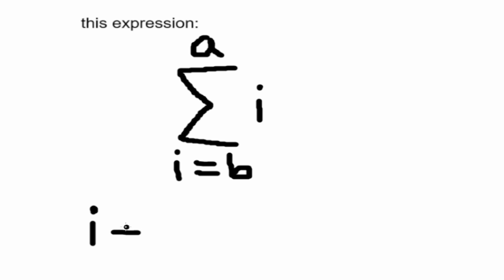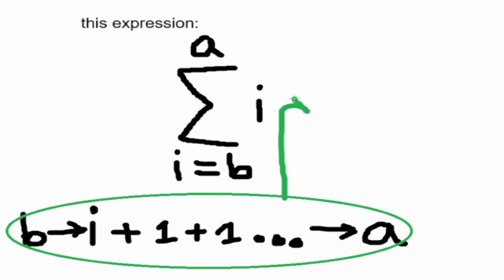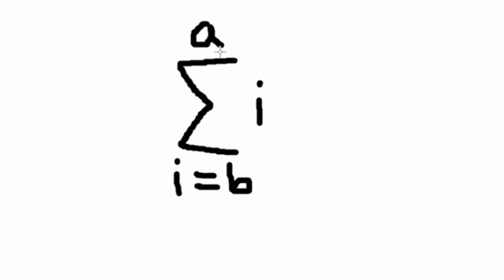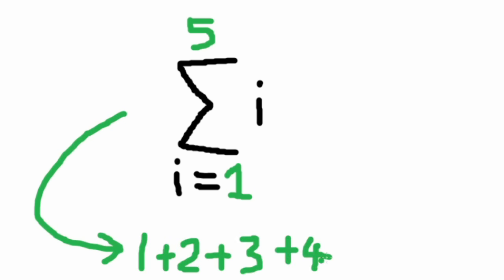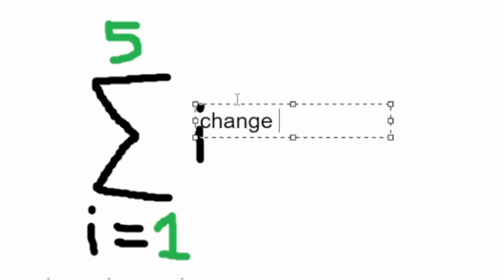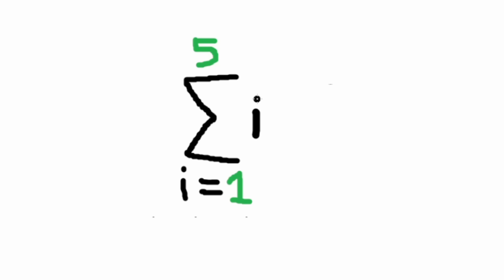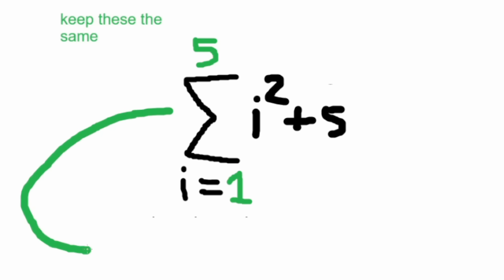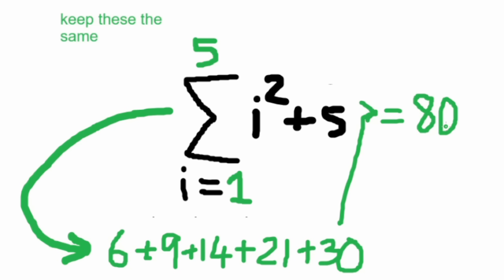With the current conditions, this expression is saying that as i increases from b to a, counting up one at a time, add the numbers together. So let's imagine that a equals 5 and b equals 1, and we keep i as it is — it produces 1 plus 2 plus 3 plus 4 plus 5 equals 15. The special part is that when we change the i on the right to something more complex, for instance i squared plus 5, and keep the other parameters as they were: 6 plus 9 plus 14 plus 21 plus 30 equals 80.